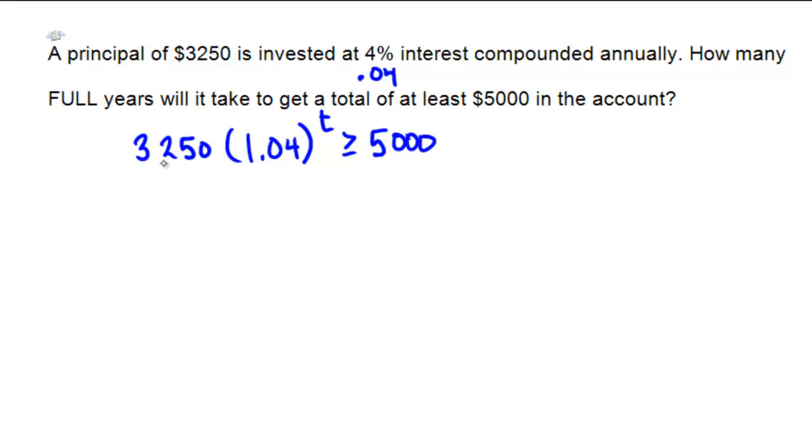First step, the division step. We'll divide both sides by $3,250. So that 1.04 to the power of T should be bigger than or equal to $5,000 over $3,250.